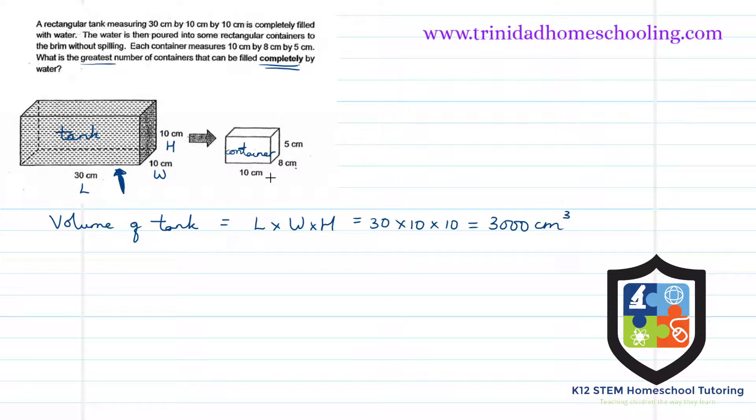Now let's find the volume of one container. The volume of one container - this is also a cuboid - so we have length by width by height: 10 multiplied by 8 multiplied by 5 to give us 400 centimeters cubed.